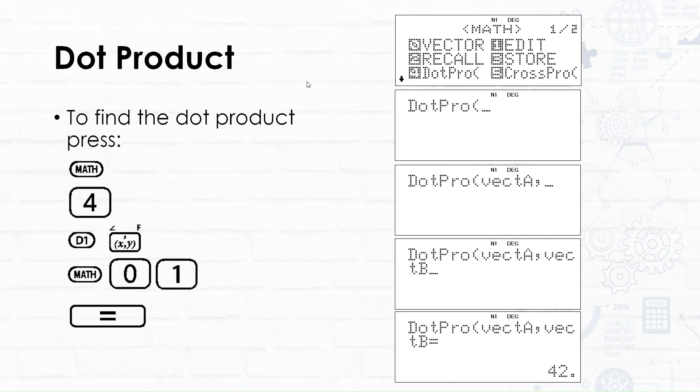Now to find the dot product, you need two vectors. We're going to press math, which is our vector menu button essentially, and then we're going to choose 4 for dot product, type in our first vector, use the x comma y in brackets button to separate the two, and then press your math zero one to call vector B. You can see that it will give us 42. Let's do it together now on the calculator.